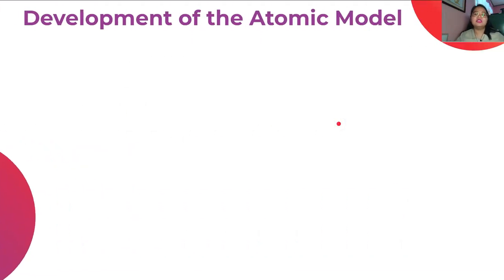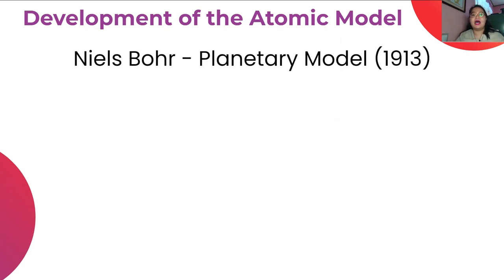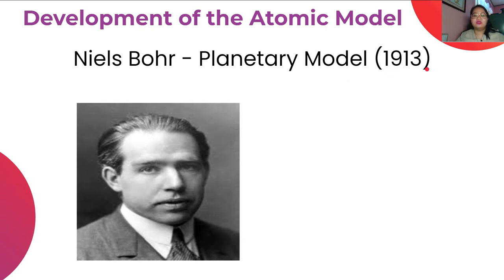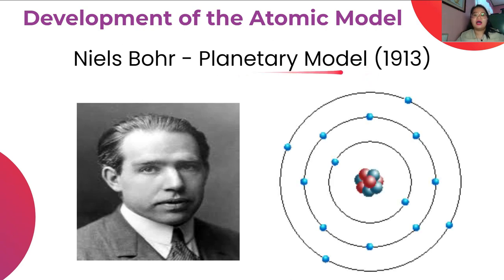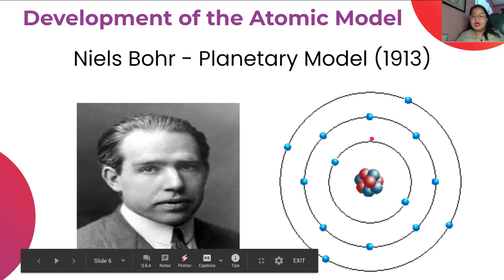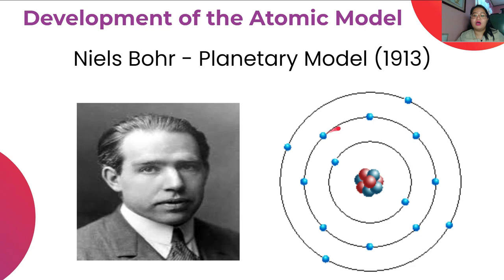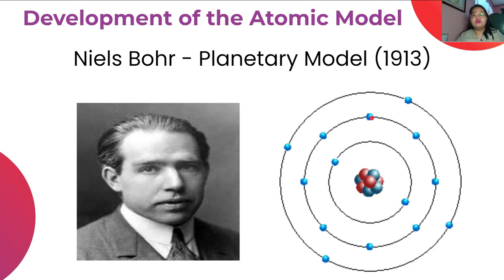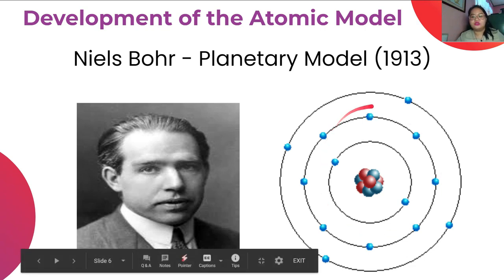Niels Bohr then developed another atomic model called the planetary model, proposed in 1913. From the term planetary model, its atomic model looks like the solar system, where the nucleus in the center represents the sun, and the electrons are like planets orbiting around the nucleus along certain orbits.